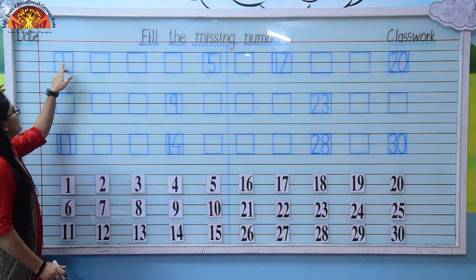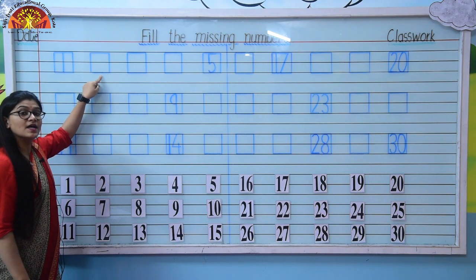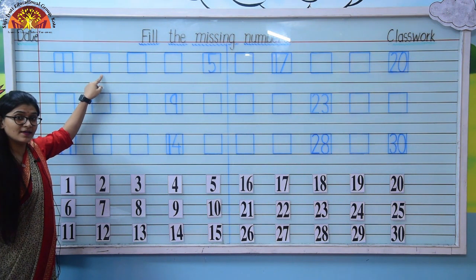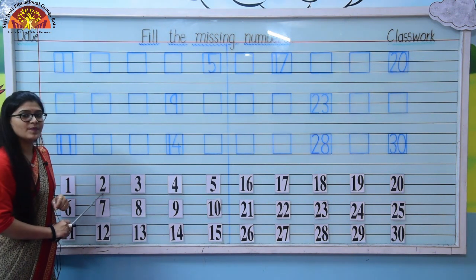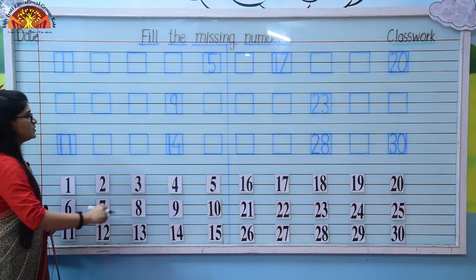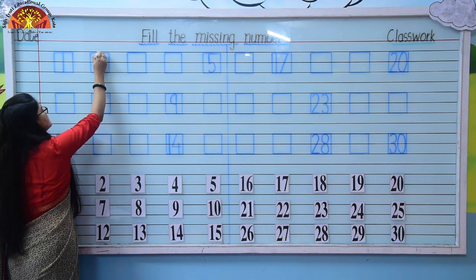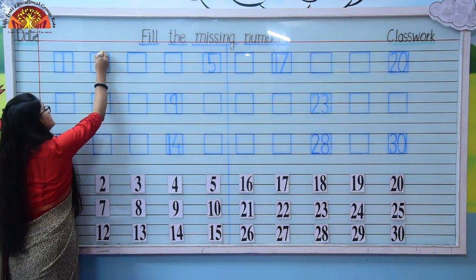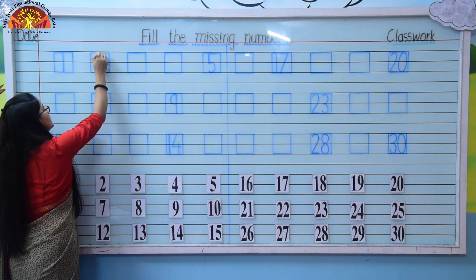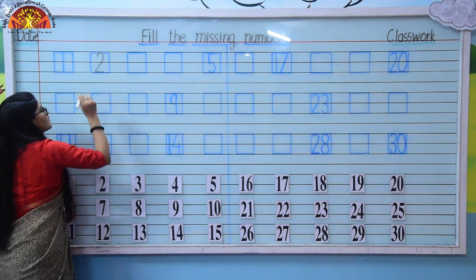Number 1 is written over here, and our next number is missing. So tell me kids, which number comes after 1? Number 2. So in this box we will write number 2. Touch the block properly and write kids. Number 2.